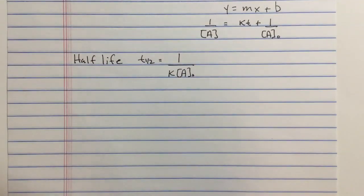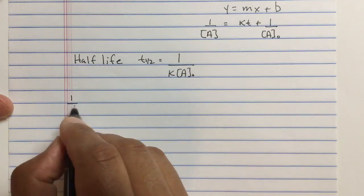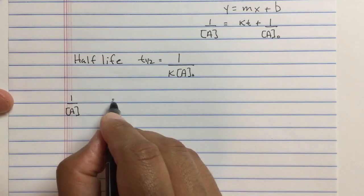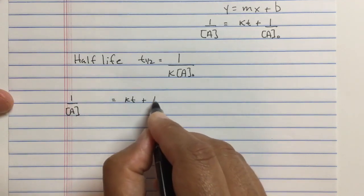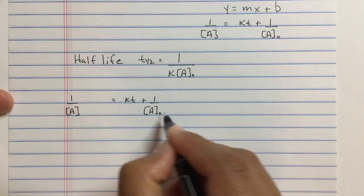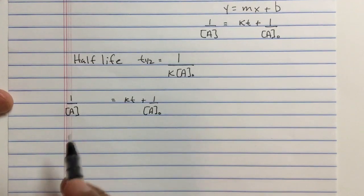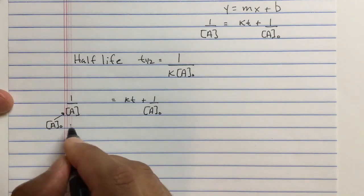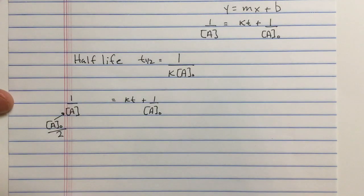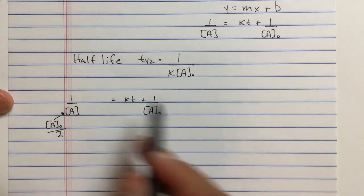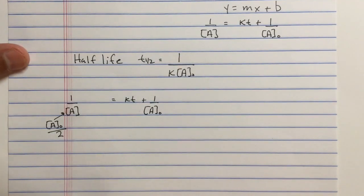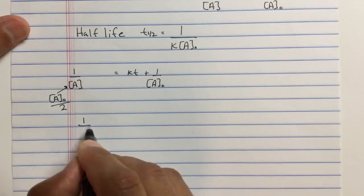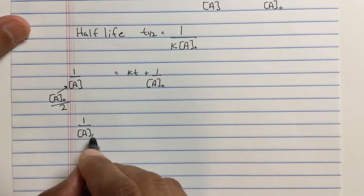Let me show you how we get there. If we take our integrated rate law, we want to know when this species is [A]₀ over 2.